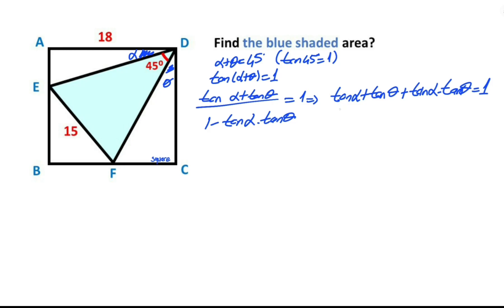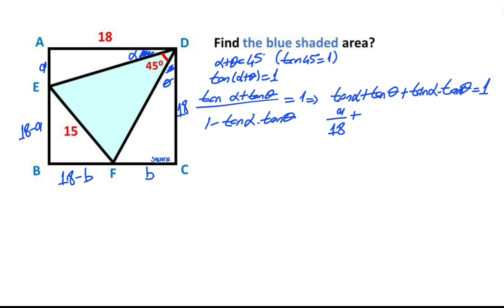Rearranging, we get: tangent alpha plus tangent theta plus tangent alpha times tangent theta equals 1. I want to represent the length AE as 'a', so the remaining side must be 18 minus a. Let's call this other length 'b', so the remaining part is 18 minus b. The length DC equals 18. Notice that tangent alpha equals a over 18, and tangent theta equals b over 18.